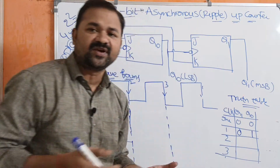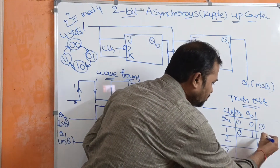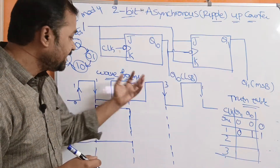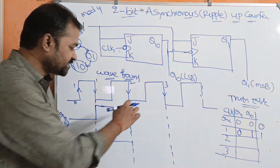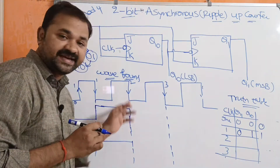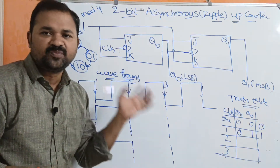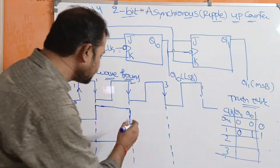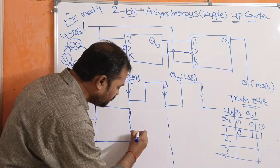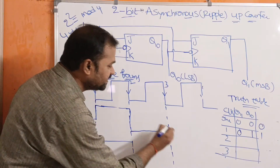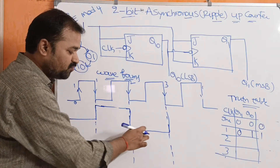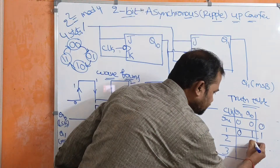Now let us analyze the second clock pulse. At the negative edge of the second clock pulse, Q0 is complemented again. Previously Q0 was 1, so now it becomes 0. This falling edge of Q0 also acts as a clock pulse to the second flip-flop. So Q1 output will also be complemented at this point.